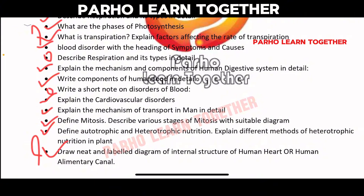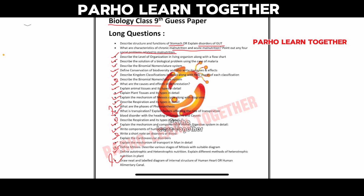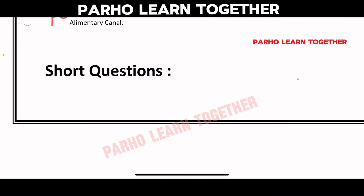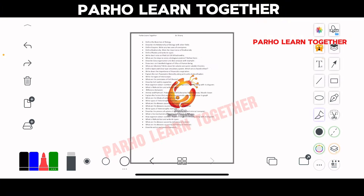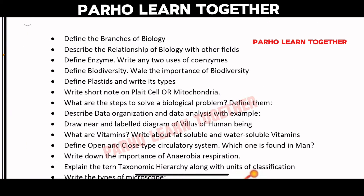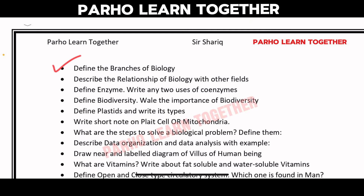If you want to take a screenshot, you can do so. Please like, subscribe, and click the bell icon so I can provide content on a regular basis. Now let's go to Class 9 short questions. I have tried to organize these chapter-wise. The branches of biology — describe the relationship of biology with other fields. Define enzymes and write two uses of enzymes.